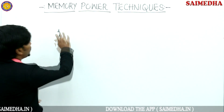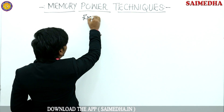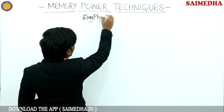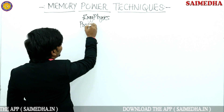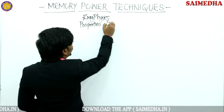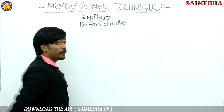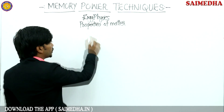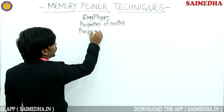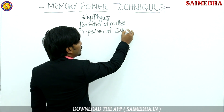So in this memory power technique, we are going to talk about engineering physics again. Engineering physics chapter: properties of matter. From the properties of matter — properties of liquid, properties of fluid. Today in the class, we are going to talk about properties of a solid.